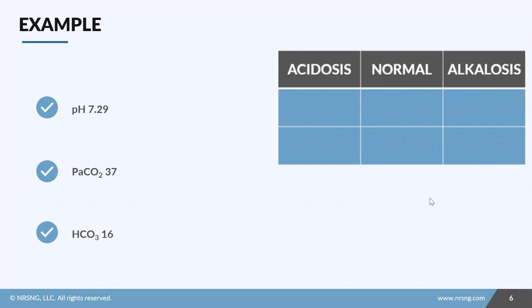Step one: pH of 7.29, it's acidotic. CO2 of 37, that's normal. Bicarb of 16 - well bicarb equals base, so a low bicarb is acidotic. All right, step two: what's my source? Boom, metabolic acidosis.